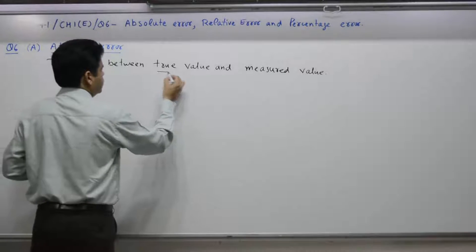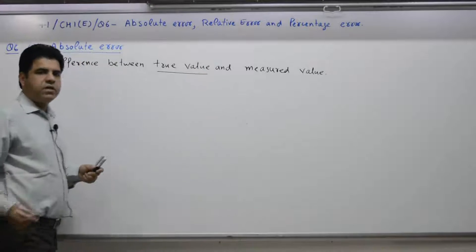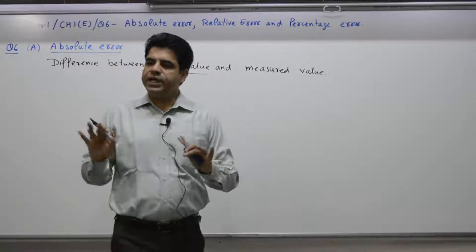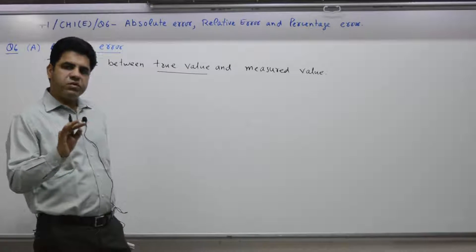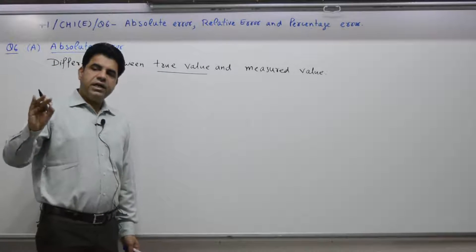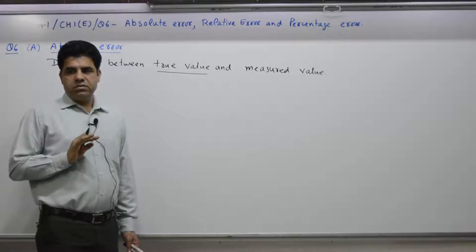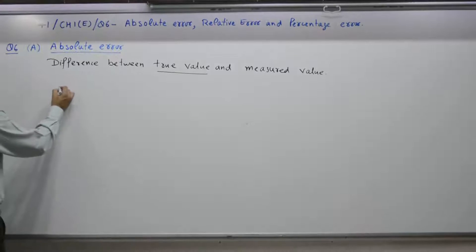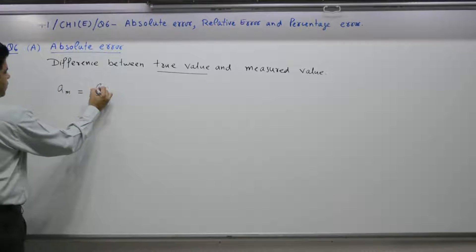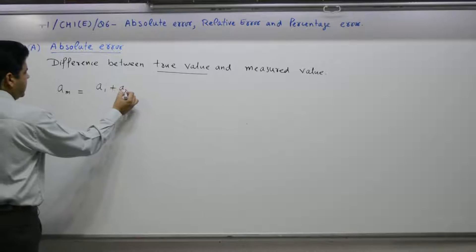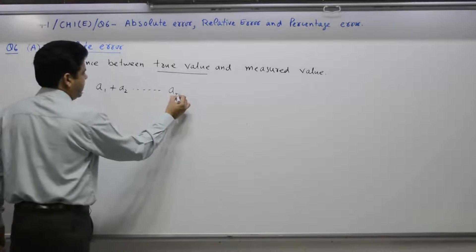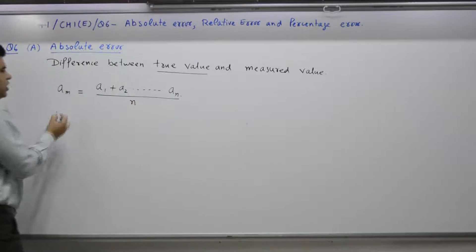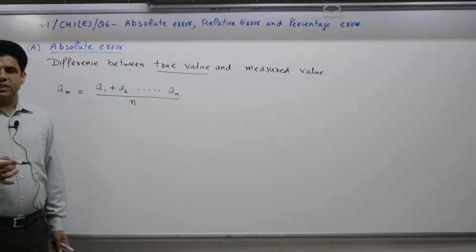What is true value? If we perform one experiment measuring refractive index and give it to 8 students, all 8 students will come out with different readings. So which one is the true value? The mean value. The mean value — from a1, a2, up to n — divided by n, is taken as the true value.